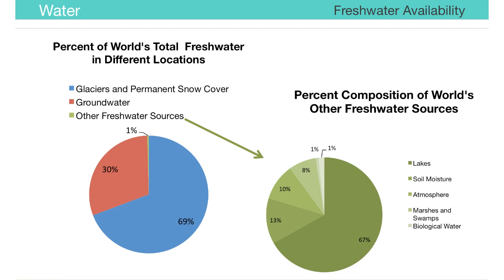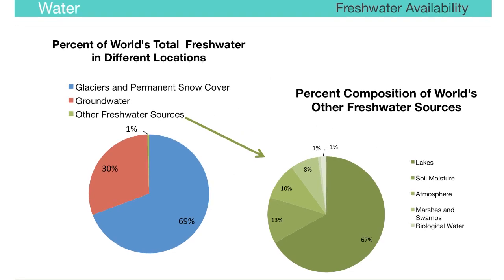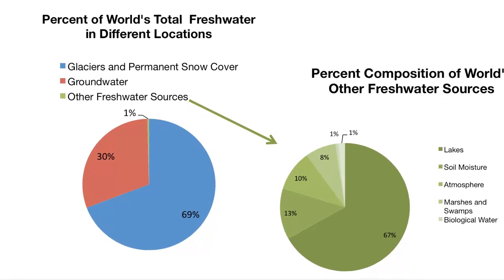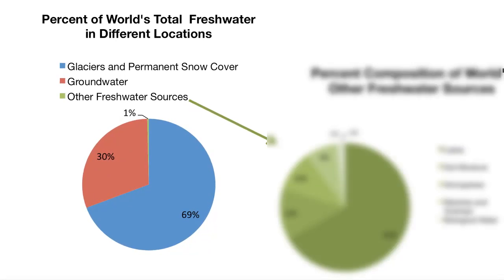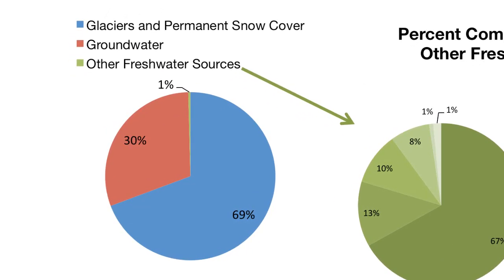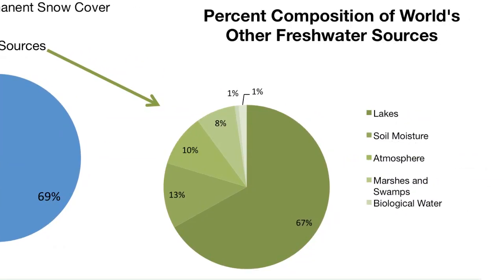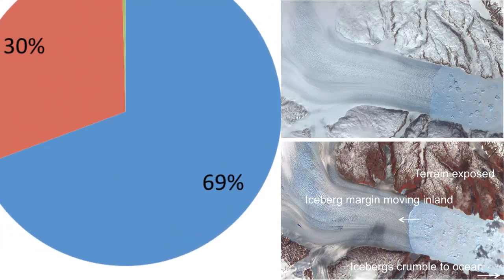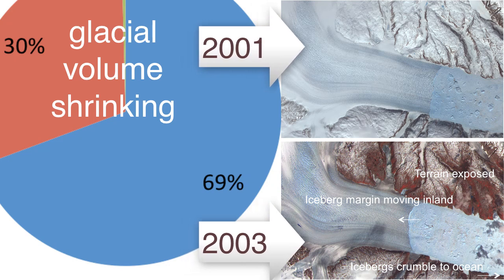This image shows the approximate distribution of fresh water in various reservoirs. Our best science estimates that over two-thirds of the fresh water is in the form of glaciers and permanent snow cover. Of the remaining, most is in groundwater, and only one percent of the total is estimated to be in more or less accessible forms. The volume of glaciers is shrinking dramatically each year, as indicated by images taken by NASA.